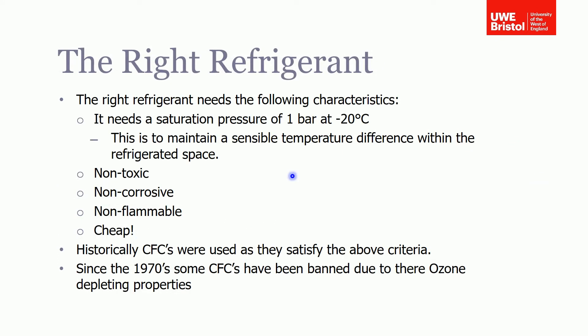For power generation cycles we use water as the working fluid, but that won't work for the reversed Rankine cycle where we need to cool things. Instead we use refrigerants, and a number of refrigerants have been developed over the years. They need certain characteristics: saturation pressures at around minus 20 degrees at one bar, so they can exist as vapors at those temperatures to absorb heat and provide a sensible temperature difference in the refrigerated space.